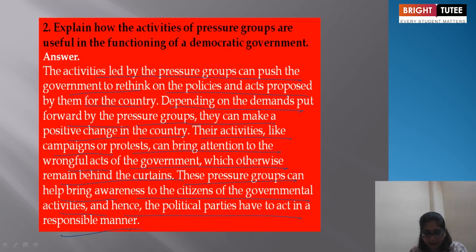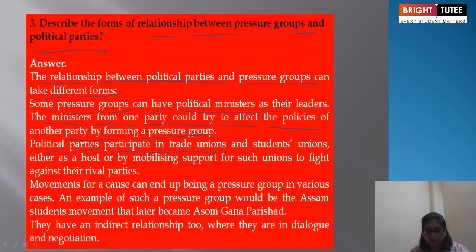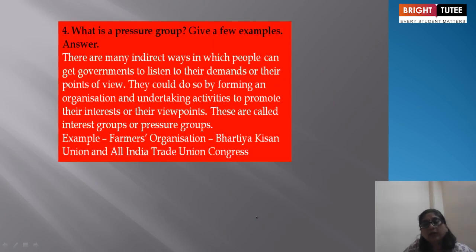Pressure groups can help bring awareness to citizens about governmental activities, and hence political parties have to respond accordingly. Regarding the relationship between political parties and pressure groups: pressure groups can have political ministers as their leaders; ministers of one party could try to counter the politics of another party by forming a pressure group; political parties participate in trade unions either as hosts or by mobilizing support. Movements for a cause can end up becoming pressure groups — an example is the Assam Students movement, which later became a political party.